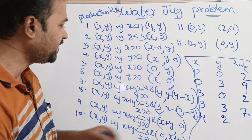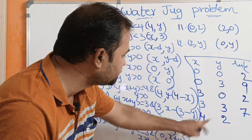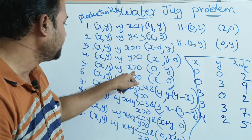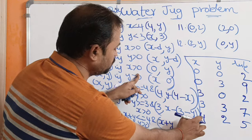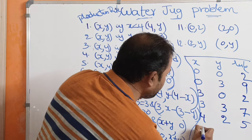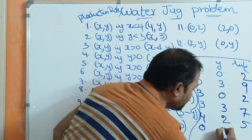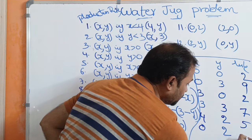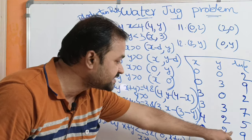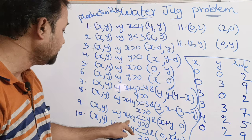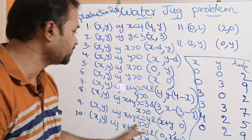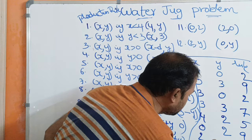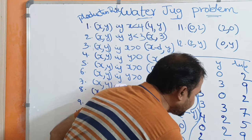Next, we apply the fifth rule to empty the 4-liter jug: x is 4, which is greater than 0 — condition true. So x becomes 0, and y remains 2. State is (0, 2). Now we apply the ninth rule to place the remaining 2 liters into the 4-liter jug: x plus y = 0 plus 2 = 2, which is less than or equal to 4, and y is greater than 0 — both conditions true. New state is (2, 0).